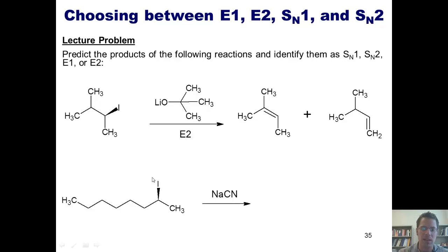Let's look at this example. My leaving group stuck to a primary, secondary, tertiary carbon. It is stuck to a secondary carbon. That tells me it could be either SN1, SN2, E1, or E2.